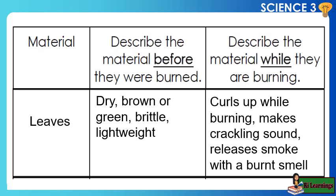Material: Leaves. Describe the material before it was burned — dry, brown or green, brittle, lightweight. Describe the material while it is burning — curls up while burning, makes a crackling sound, releases smoke with a burnt smell.